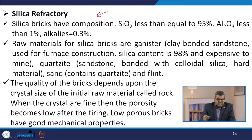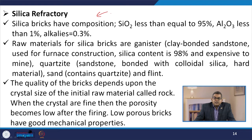Silica bricks have a composition of SiO2 ≤ 95%, Al2O3 < 1%, and alkali approximately 0.3%. Raw materials for silica bricks are ganister — a clay-bonded sandstone used for furnace construction with 98% silica content, expensive to mine — and quartzite sandstone bonded with colloidal silica. The quality of the bricks depends upon the crystal size of the initial raw material.